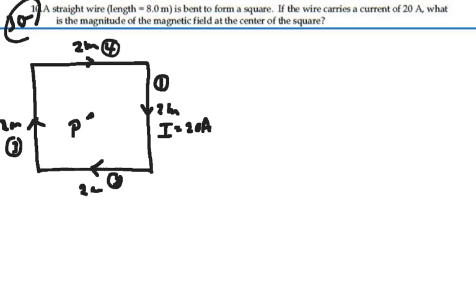Now if we look at segment number one, we have a current that is flowing in the negative y direction as I've drawn it. And our theta one would be this first theta here. And our theta two would be from the direction of the current pointing back to the point P. So there's our theta two.